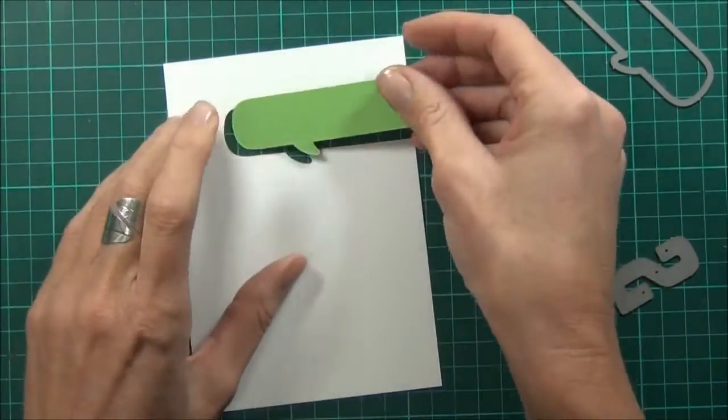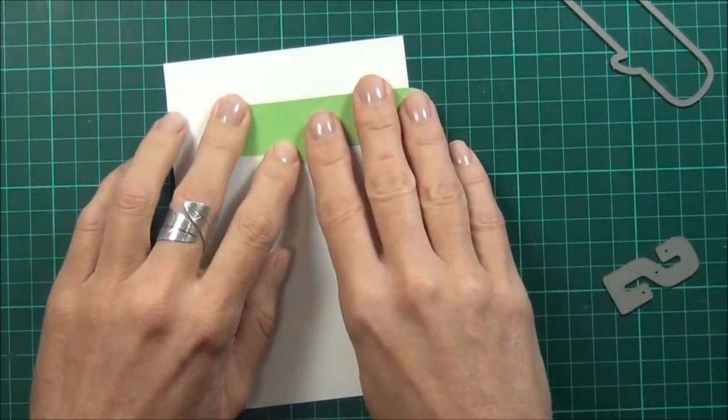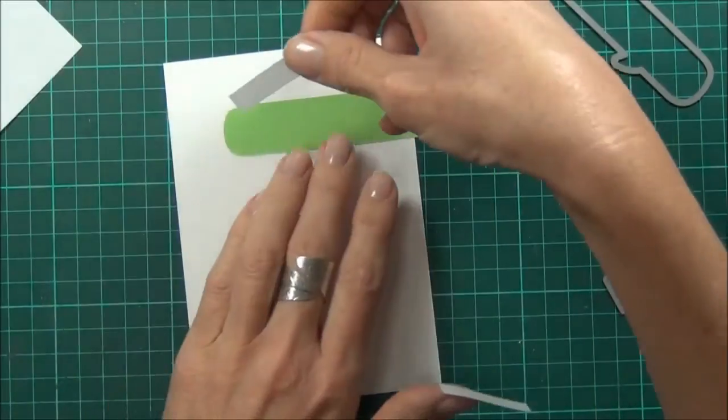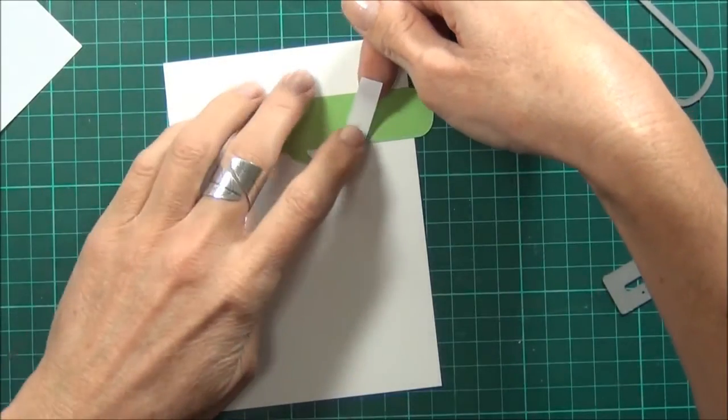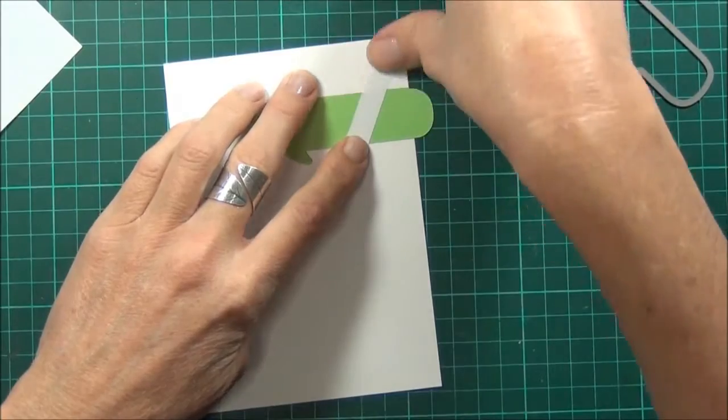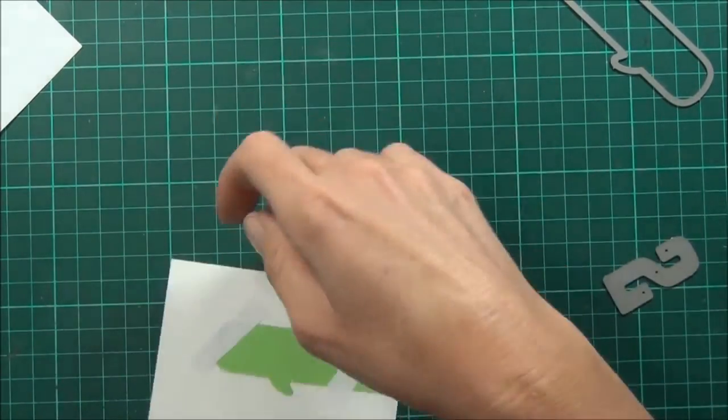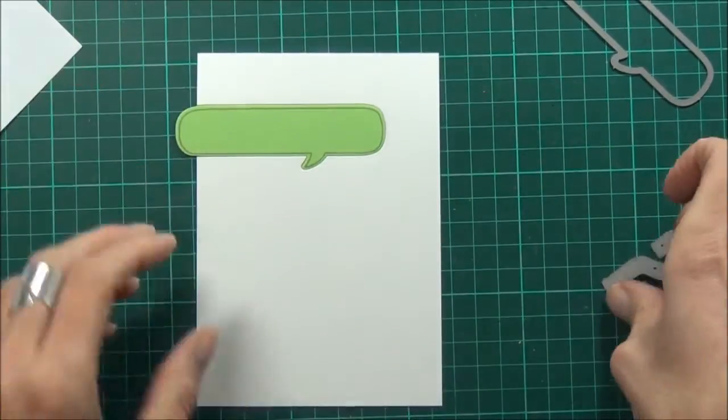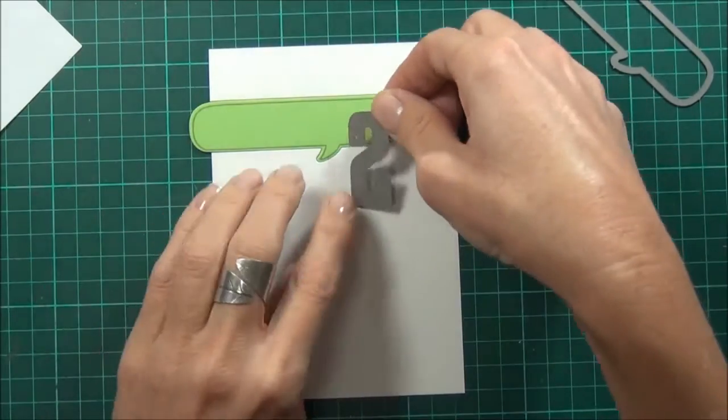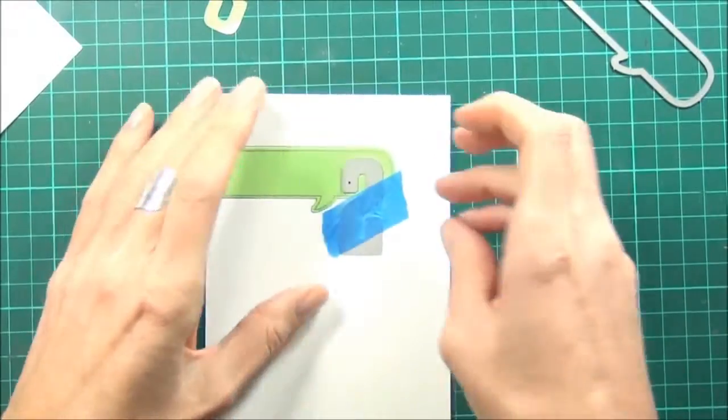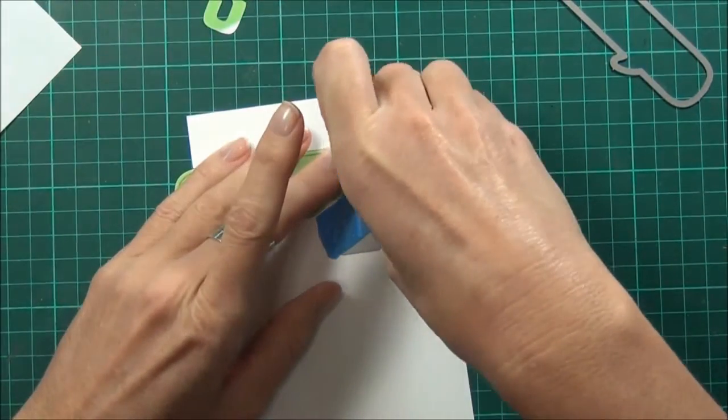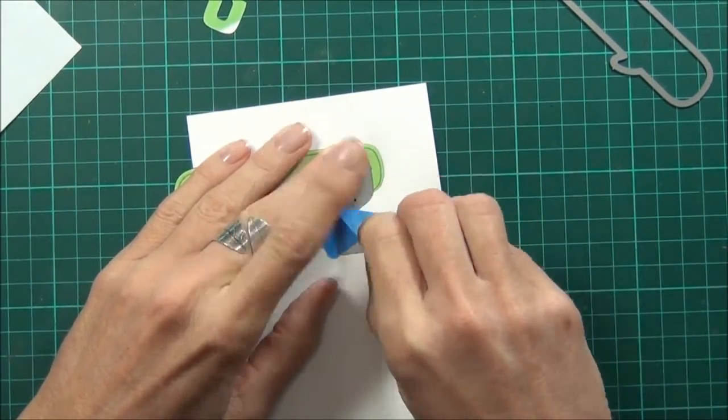I'll just turn my panel over and pop my die cut straight into position. I've got some adhesive on some tape or paper that I'm just sitting over the back to hold that in place, because I'm going to be running this through the die cutting machine again, this time with the number two. I'll just gently remove my tape.